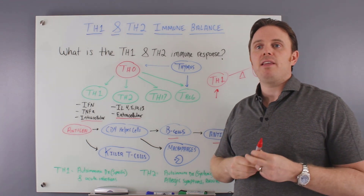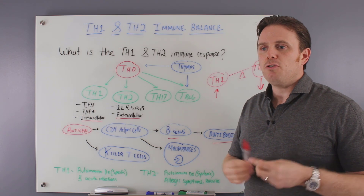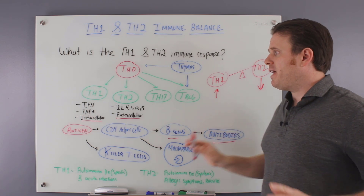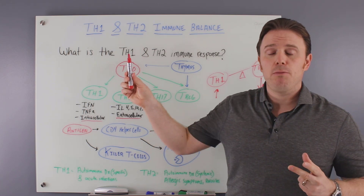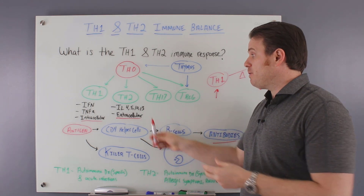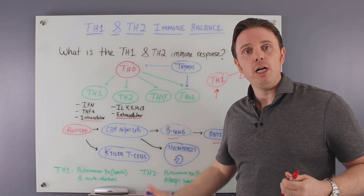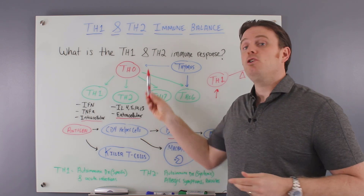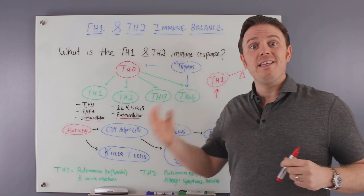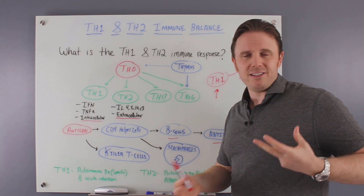TH2 boosters tend to be things like caffeine, green tea, resveratrol, and pycnogenol — various polyphenols and bioflavonoids that bump up TH2. I'm not a big fan of just modulating the immune response for TH1 or TH2 — I think that can be a little palliative. Like caffeine is a big one for TH2, so if someone tells me coffee makes them feel terrible, that may indicate they're already TH2 dominant. I look at these compounds not as a means to bump up the immune system, but as a way to collect data.